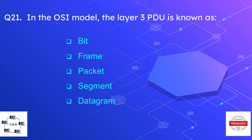Question number twenty-one is: in the OSI model, the layer three PDU is known as — bit, frame, packet, segment, or datagram? The correct answer is packet. Packet is the data unit at the network layer, or layer three.